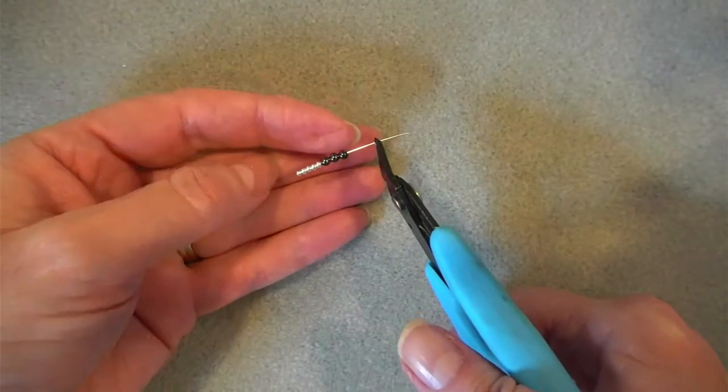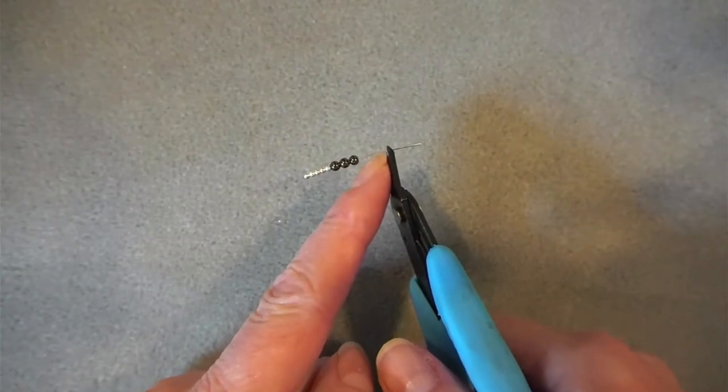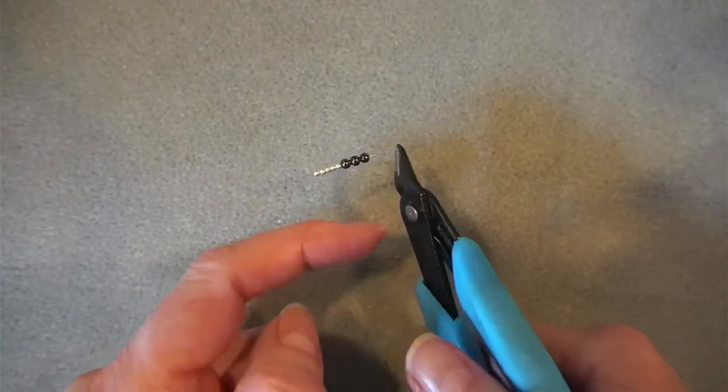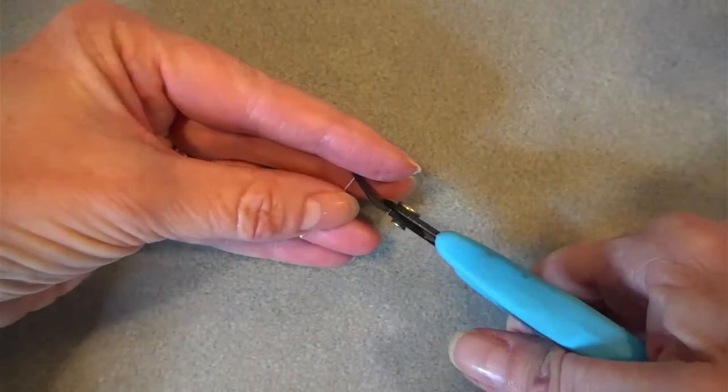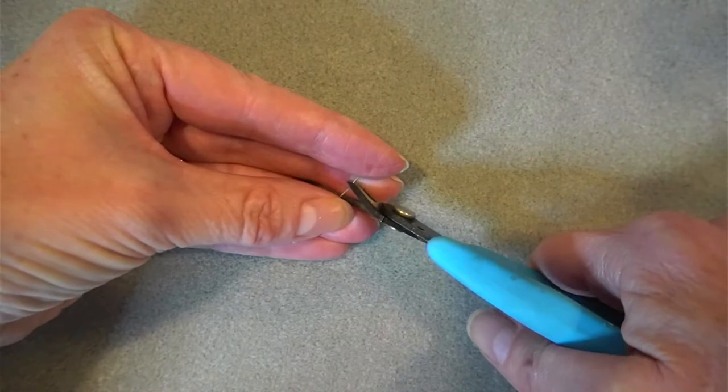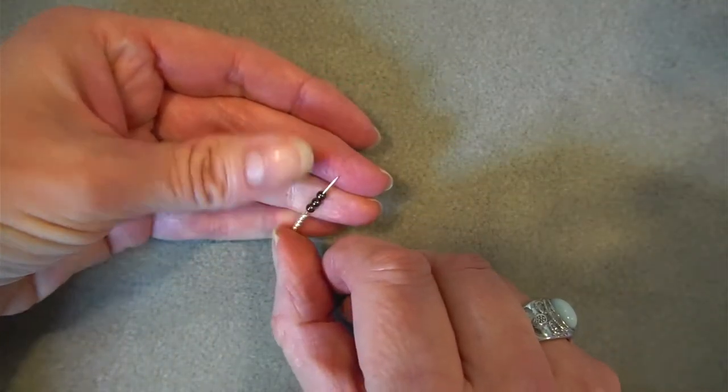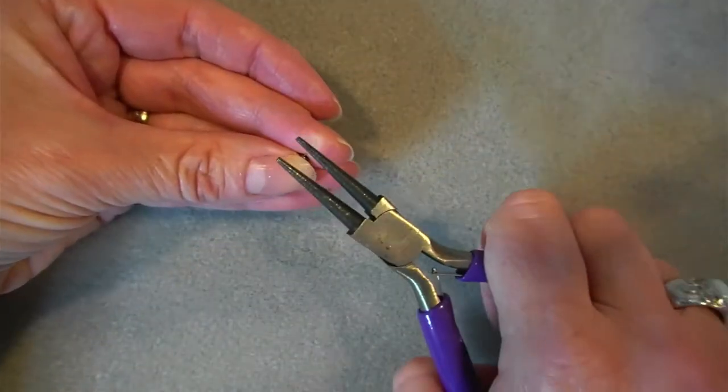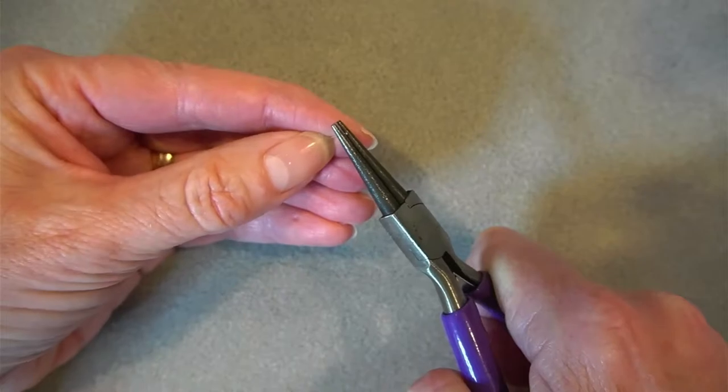Notice that I've put the flat side of my flush cutters closest to the beads. I'm going to hold either side of the wire so that it doesn't fly all over the place and just pop that piece aside. Now using my round nose pliers, I'm going to make a loop by twisting.